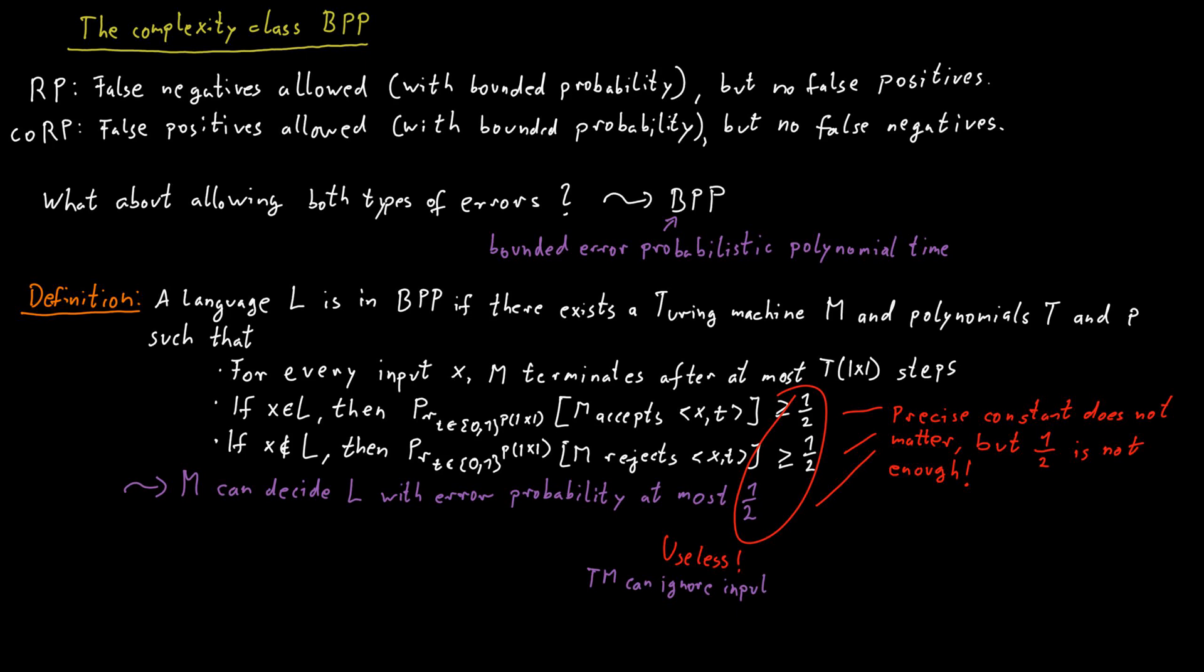It will use one random bit and output yes with probability one-half and output no with probability one-half. This Turing machine clearly runs in polynomial time. In fact, it runs in constant time.